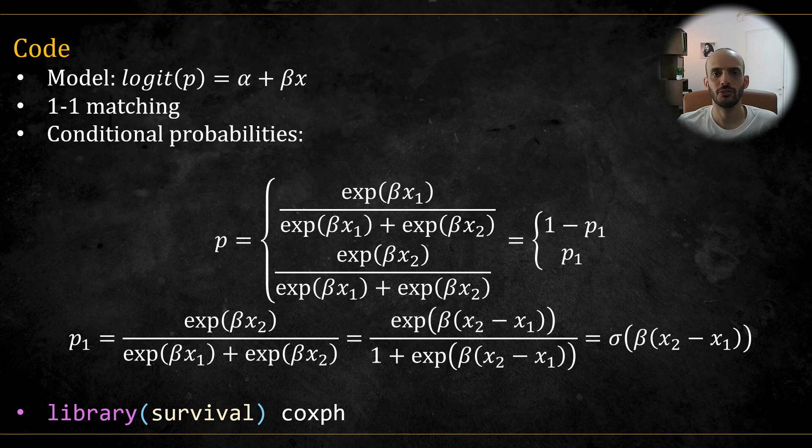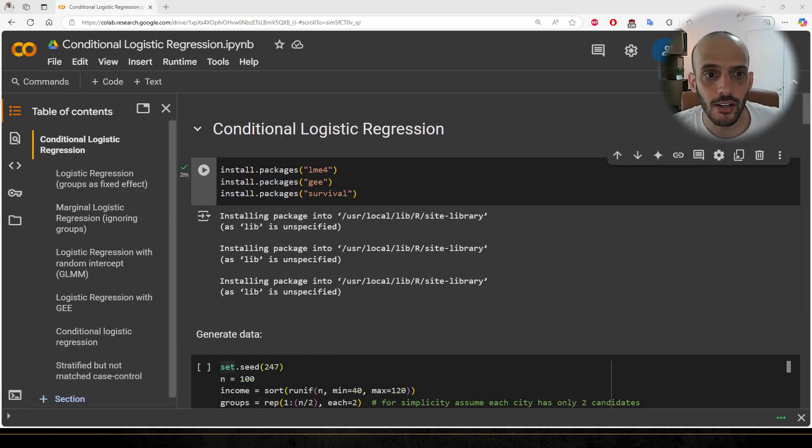Finally, also note that the package used to run conditional logistic regression in R is the survival package. The reason is that the likelihood for conditional logistic regression model is equivalent to the likelihood of a stratified Cox model, where the time to event is set to a constant. So rather than writing new code for conditional logistic regression, the implementation simply feeds the problem into a Cox PH. So let's switch to the code.